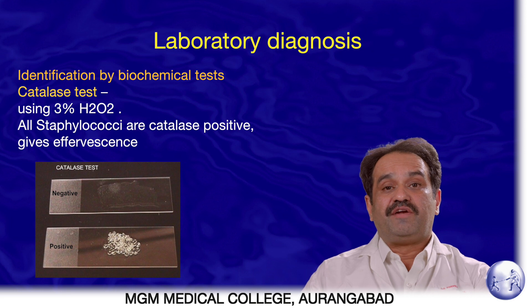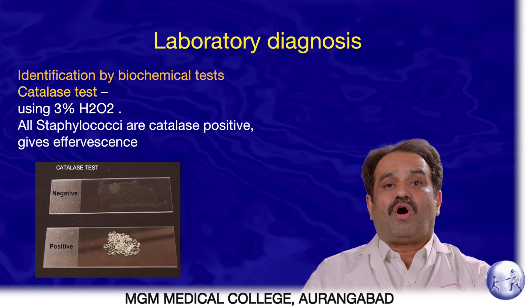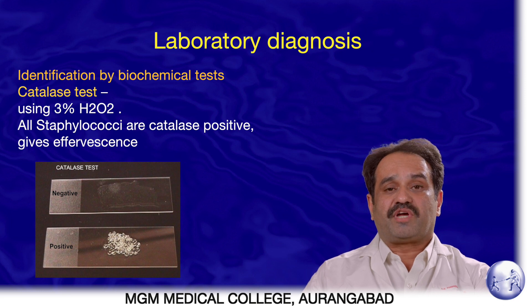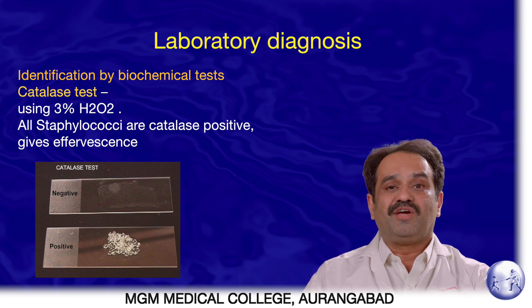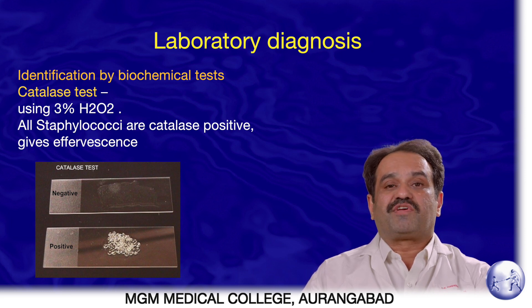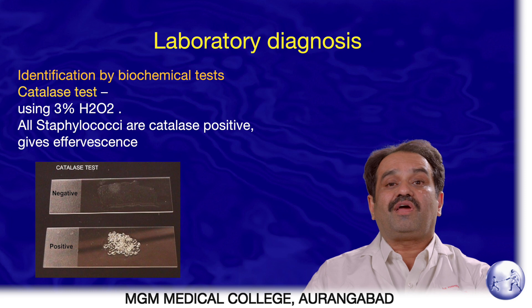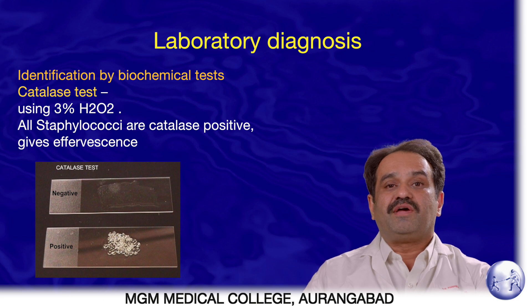For identification of colonies, first the catalase test is performed. A few drops of 3% hydrogen peroxide (H₂O₂) are placed on a slide, a colony is immersed in it, and immediate effervescence indicates a positive catalase test. All Staphylococci species are catalase-positive, which differentiates them from other cocci such as Streptococci and Neisseria.